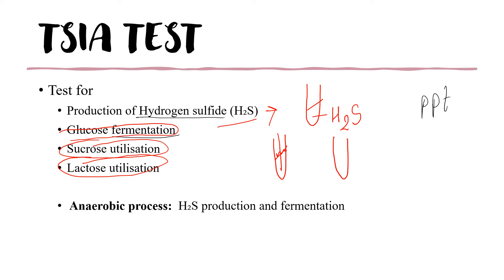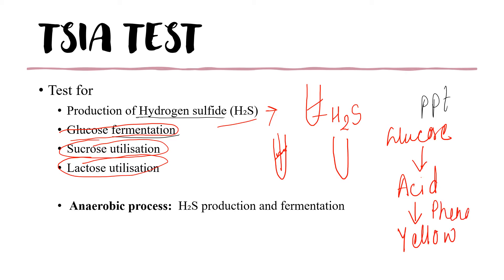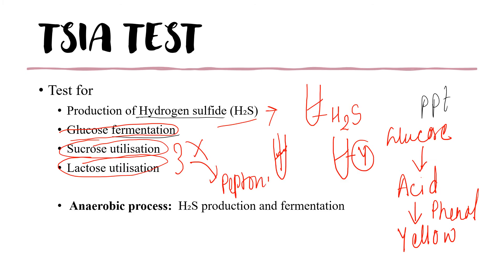Initially, when we inoculate the bacteria — first we stab the bacteria into the butt, then we streak on the surface. First, glucose is utilized; whenever a sugar is utilized there will be acid production. In acidic conditions, phenol red will be yellow. So at first few hours the test tube will be yellow. Then, if the bacteria can utilize sucrose and lactose, it will remain yellow; otherwise it will utilize the peptone.